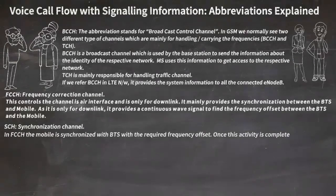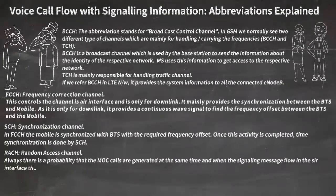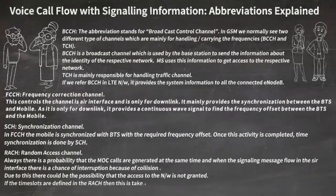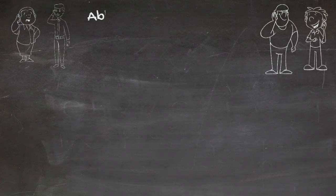SCH is the Synchronization Channel. In FCCH the mobile is synchronized with the BTS with the required frequency offset; once that activity is completed, time synchronization is done. RACH is the Random Access Channel, which is mainly responsible for controlling the time slots. Based on the frequency allocated in the network, RACH takes control and defines which particular time slot needs to be allocated to the respective channels for handling calls whenever calls are initiated.